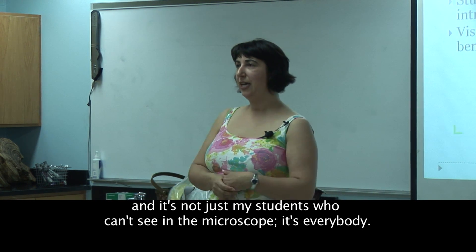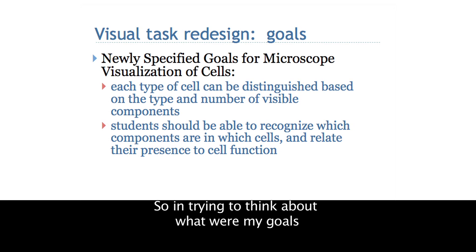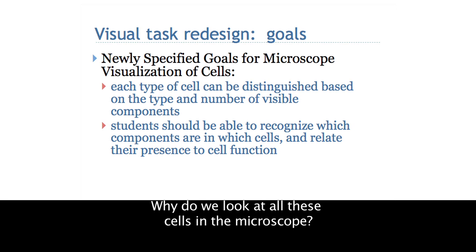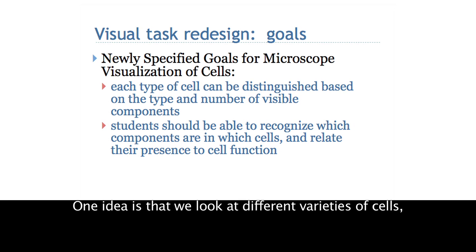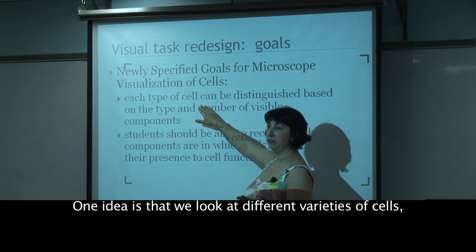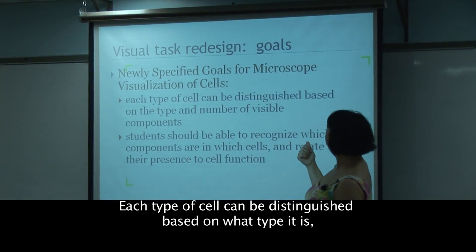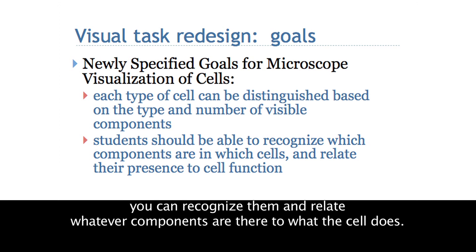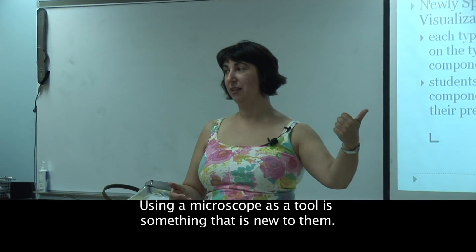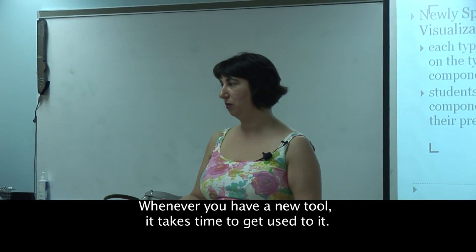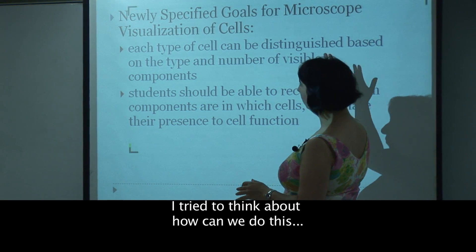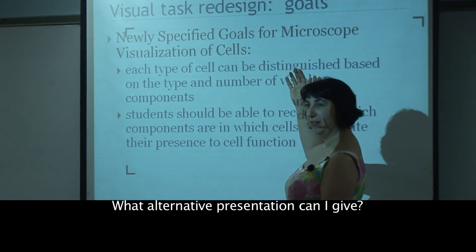So you feel like okay, there's something missing - and it's not just my students who can't see in the microscope, it's everybody. In trying to think about what my goals were for all this microscope work, I came up with a couple of general goals: why do we look at all these cells? One idea is that we look at different varieties of cell types and each type can be distinguished based on what type it is and the visible components within it. Using a microscope as a tool is new to students, so I tried to think about how we can do this without necessarily just having the microscope - what alternative presentation can I give?